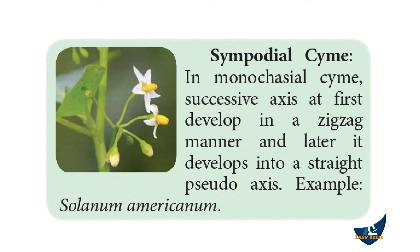Sympodial cyme. In monochasial cyme, the successive axes first develop in a zigzag manner. The first axis develops in a zigzag order, and after that the pseudo axis develops straight. So first the main axis developed in a zigzag order, and the pseudo axis developed straight. Example: Solanum americanum.